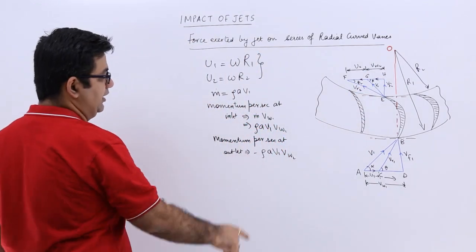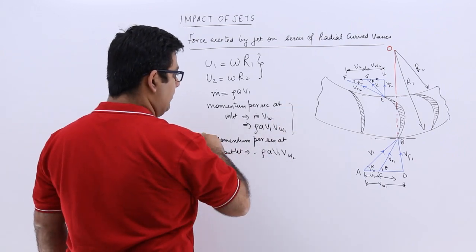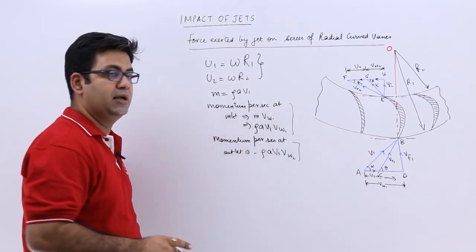That is why you have this negative sign over here. This is the momentum per second at inlet and this is the momentum per second at outlet.